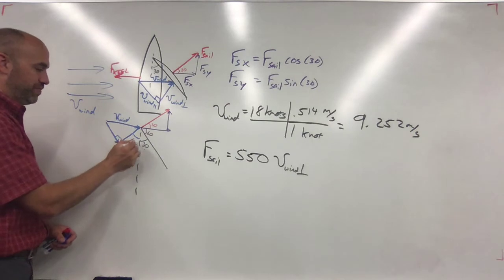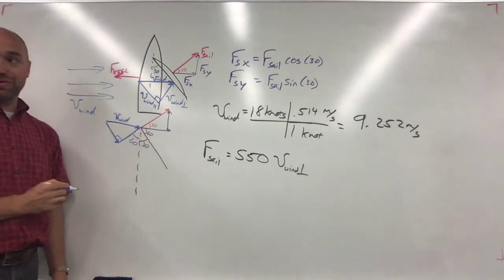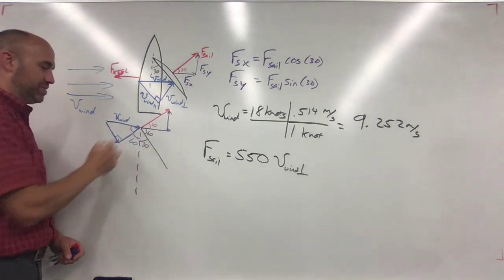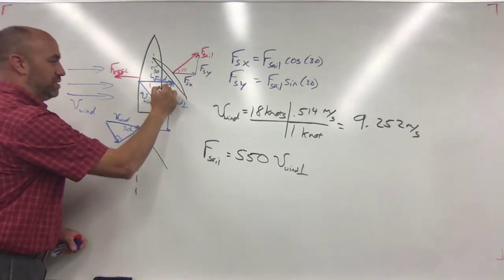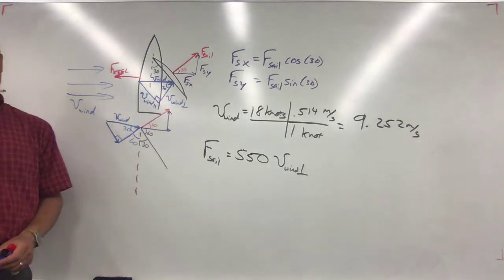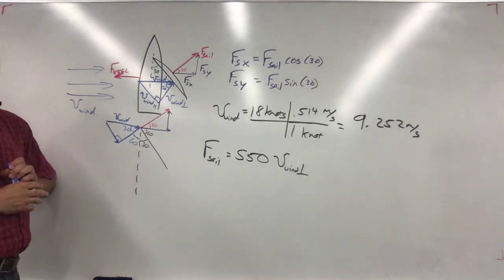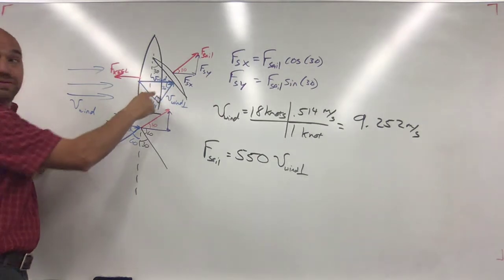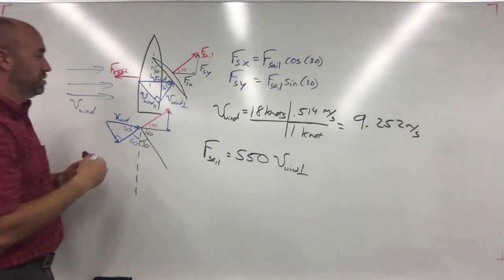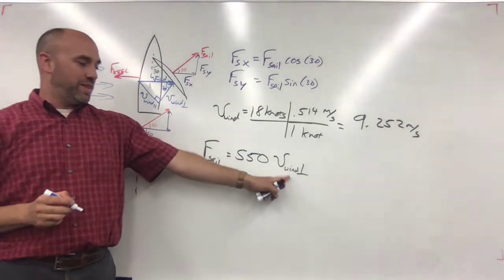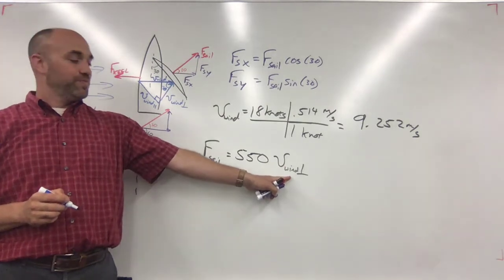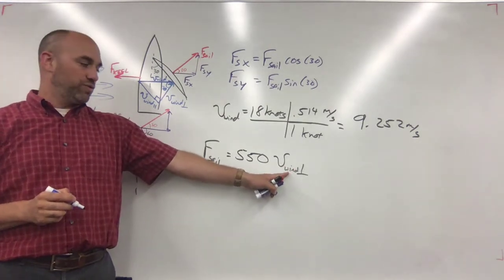What does that make this angle? This one's 60, right? And this and this are perpendicular. So what does that make this angle? This angle here is 30. Does that make sense? Use this blue triangle to find that.